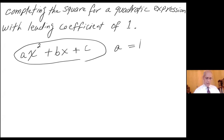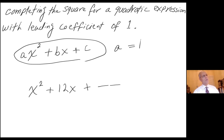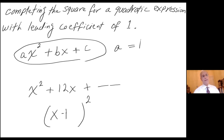For example, something like x squared plus 12x plus something. And what's the goal here? The goal is to be able to write this original expression as a complete square, like x plus or minus something in here, quantity squared. That's the goal.